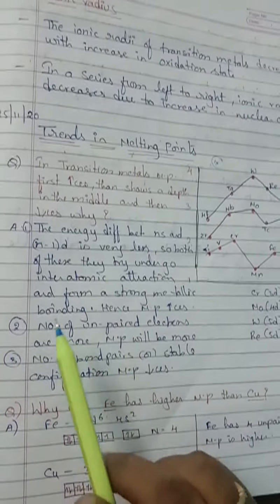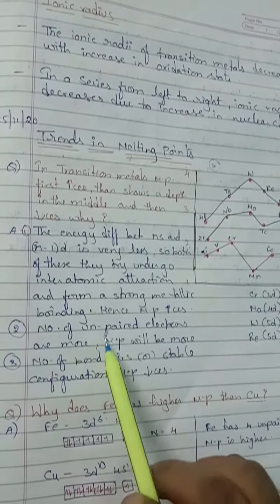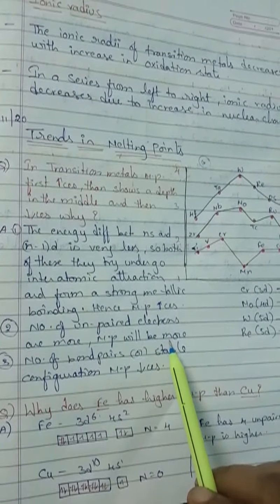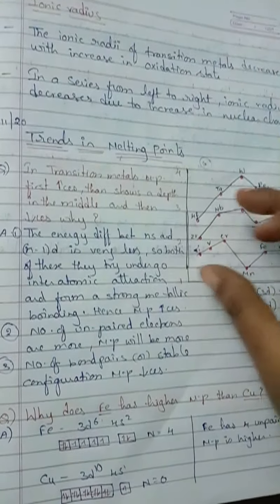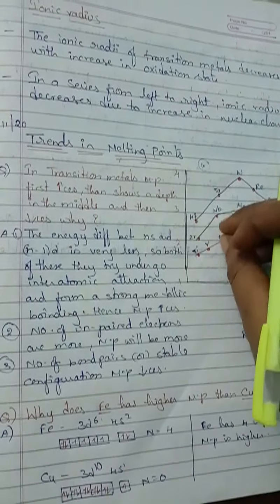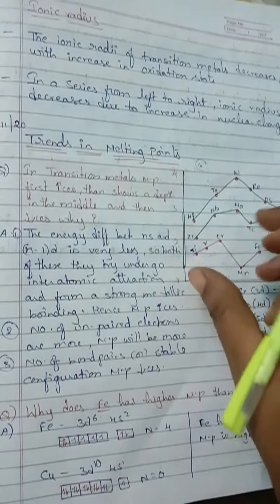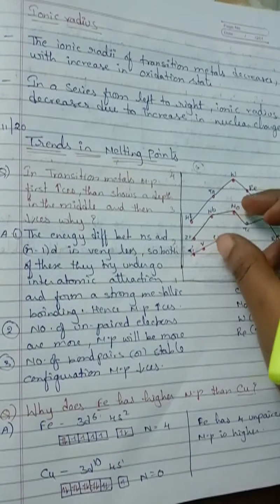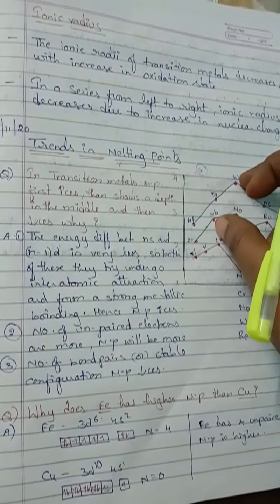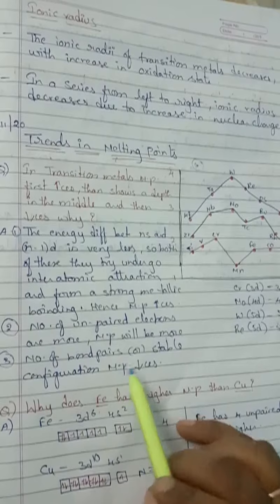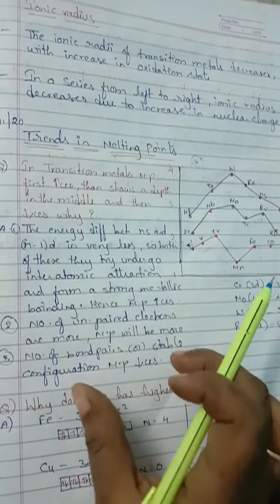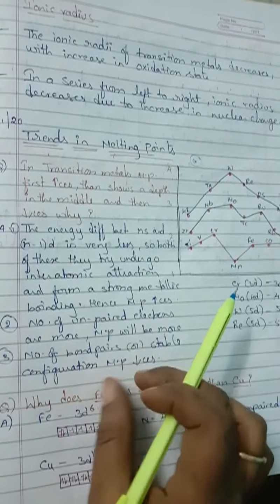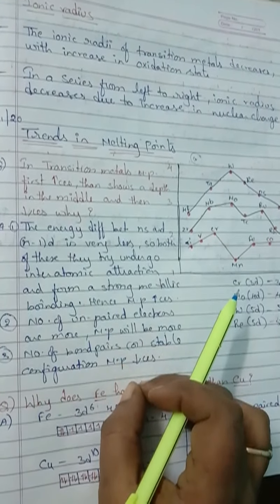In another way: when the number of unpaired electrons is more, the melting point will be more. When an element has a greater number of unpaired electrons, its melting point will be higher. If the element has a stable electronic configuration — fully filled or half filled — its melting point will decrease.